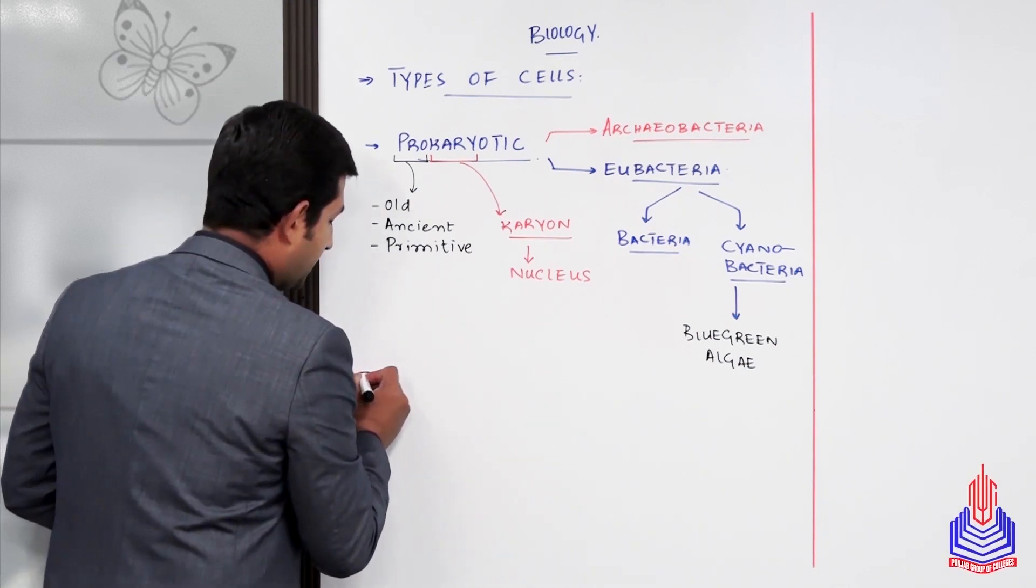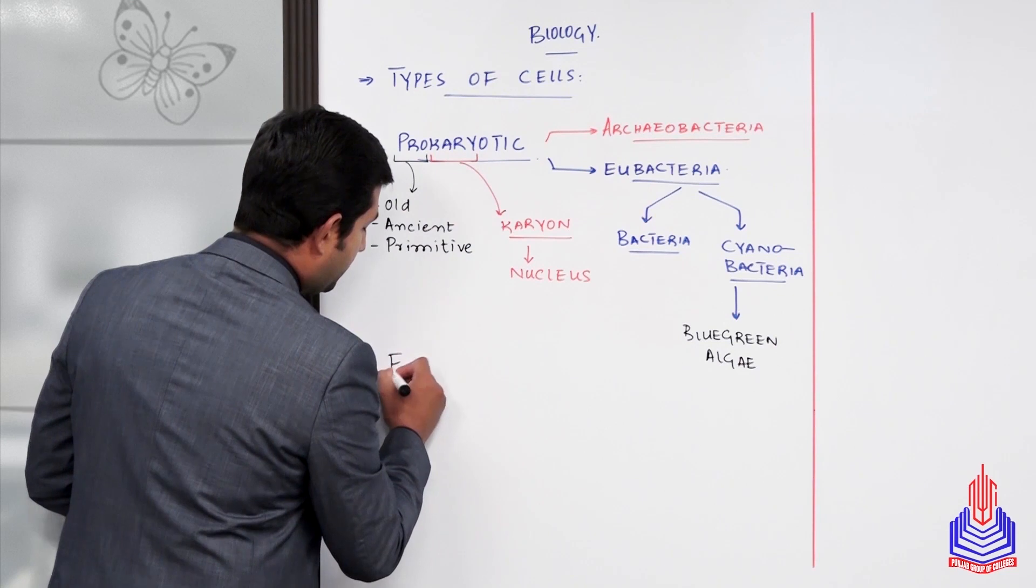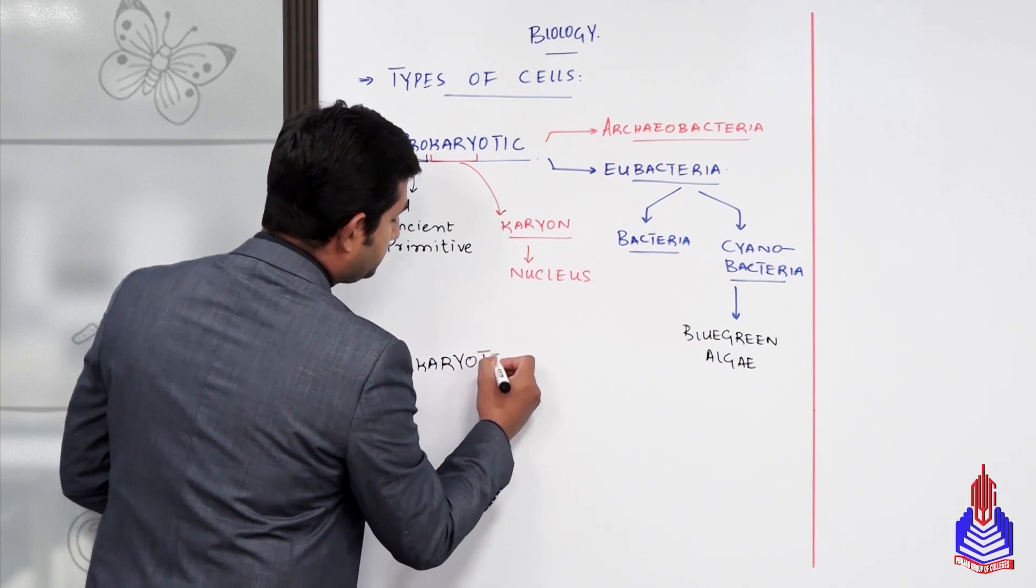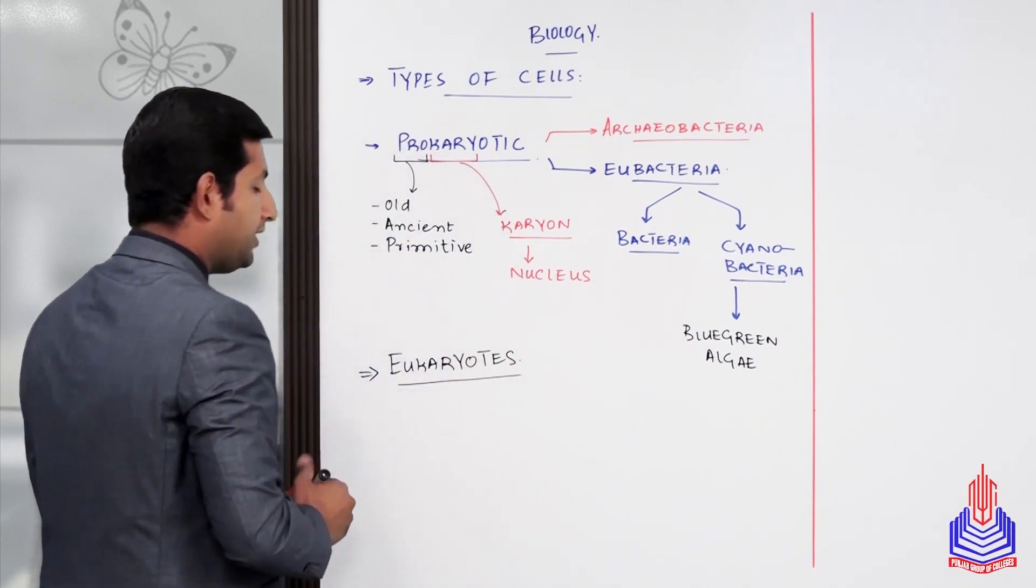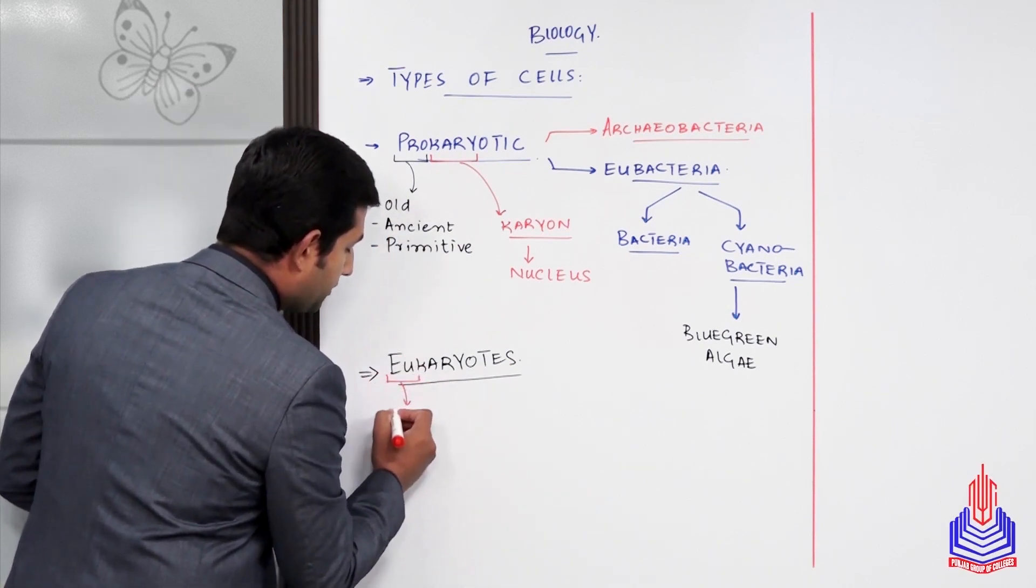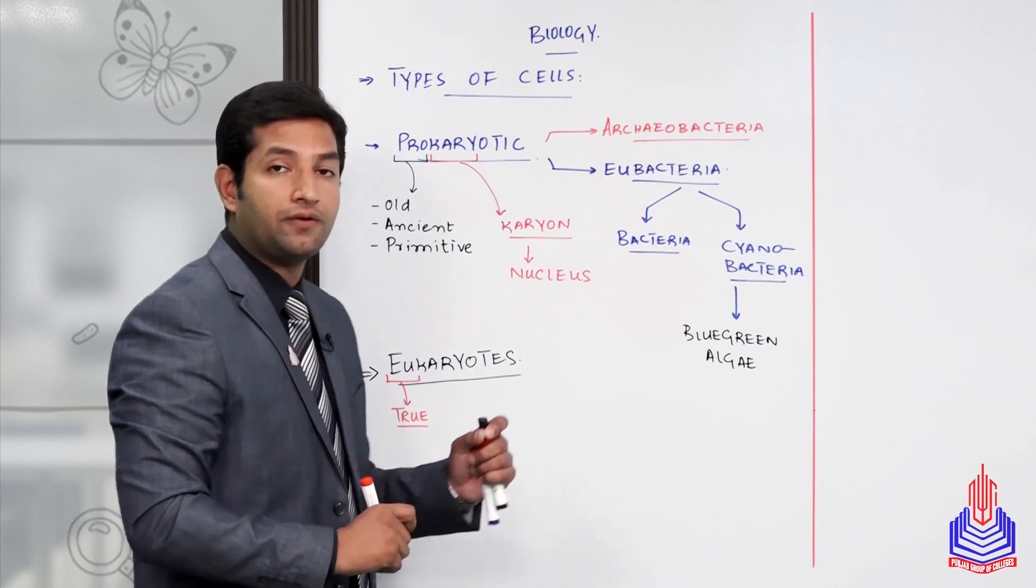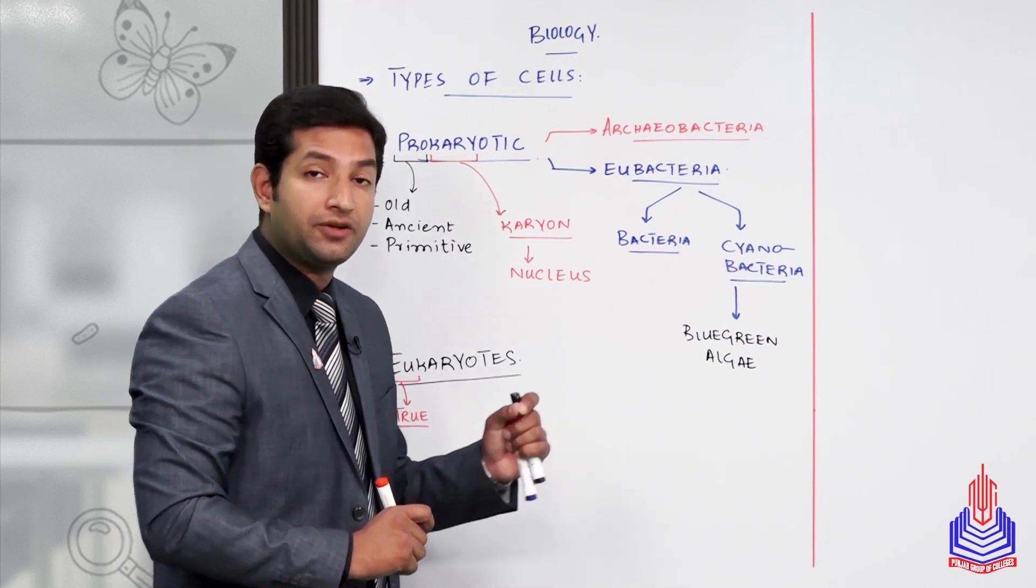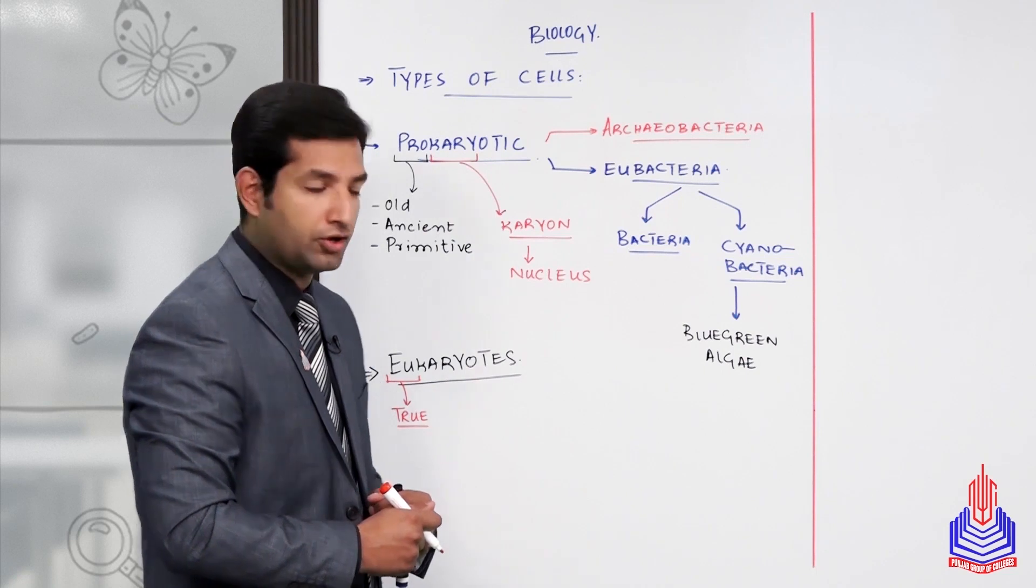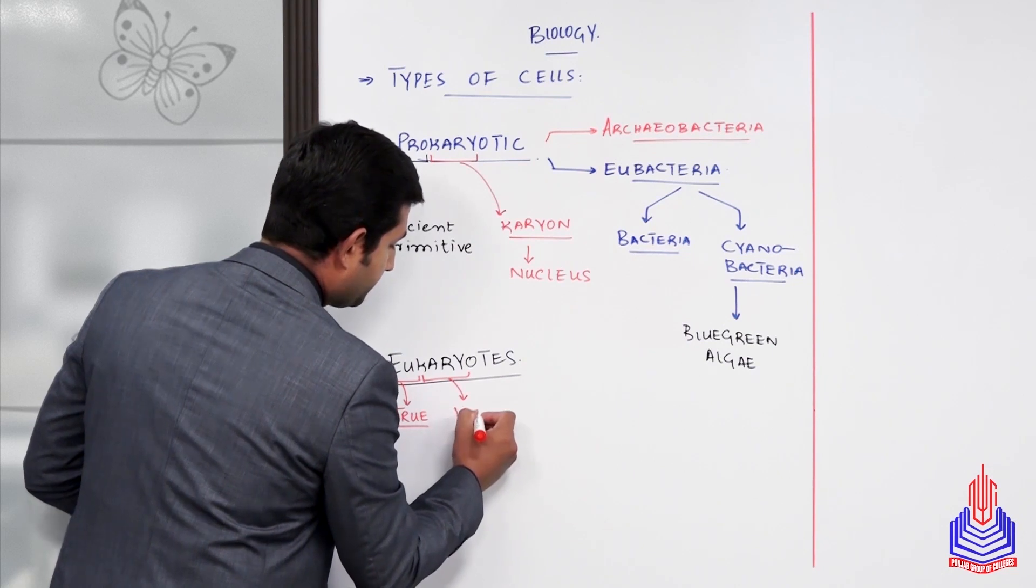The second group is the more advanced and complex type of life forms, known as eukaryotes with eukaryotic cells. 'Eu' means true - we're talking about the nucleus. Those types of cells which have a definite, well-defined nucleus are known as eukaryotic cells. Karyon means nucleus.